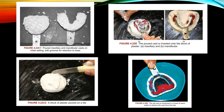After filling up the entire impression and the initial set is attained, here are the poured maxillary and mandibular casts on initial setting with grooves for retention to the base. After that, a base former is filled with plaster and the poured impression is inverted onto it, or otherwise a block of plaster is poured on a tile and the poured cast is inverted onto the block of plaster and excess is trimmed off. This is the maxillary and this is the mandibular.